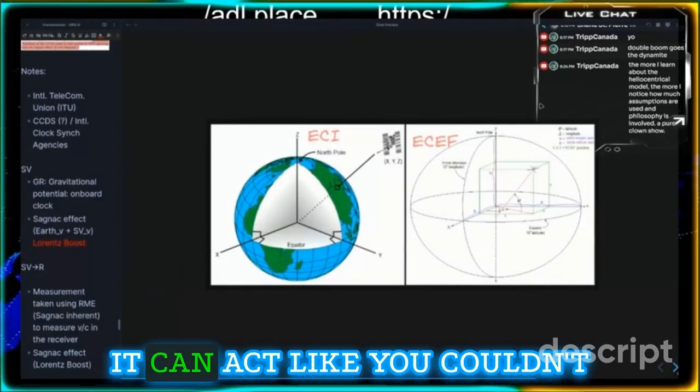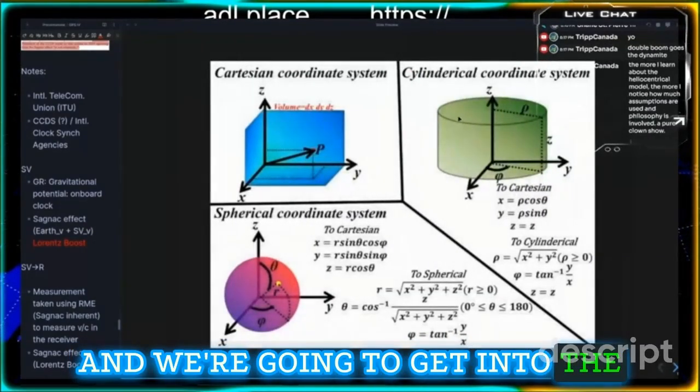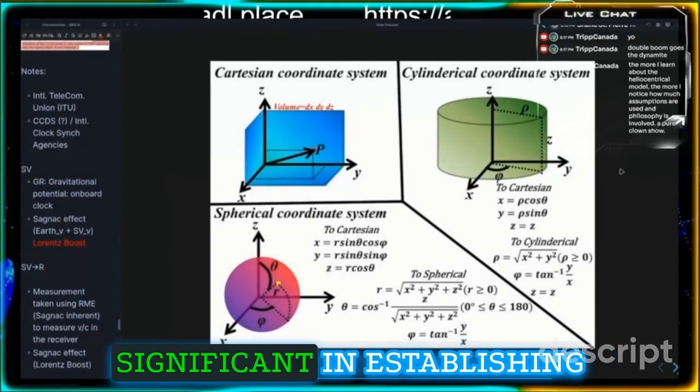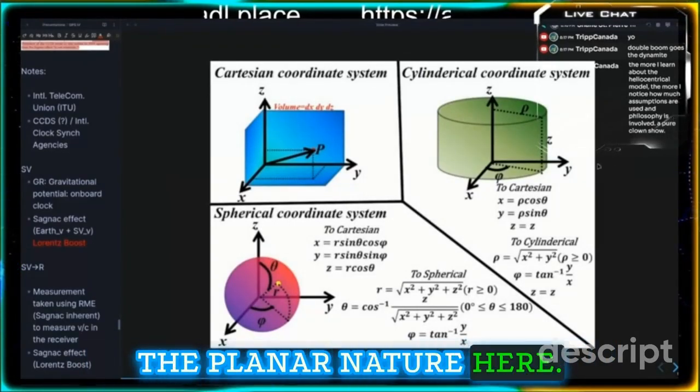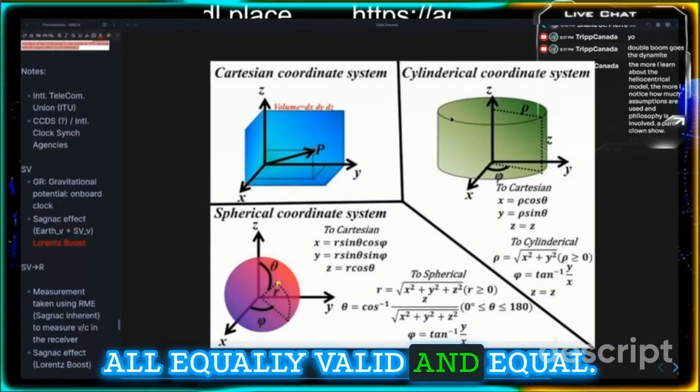To act like you couldn't map this out on a plane is insane. We're going to get into the gravitational potential corrections here in a second, which I think are super significant in establishing the planar nature. Here's some more examples of coordinate systems that are all equally valid.